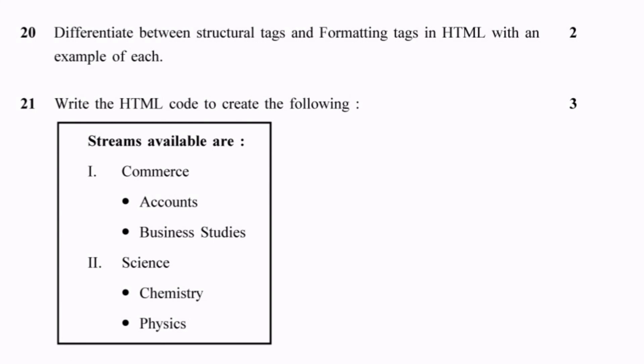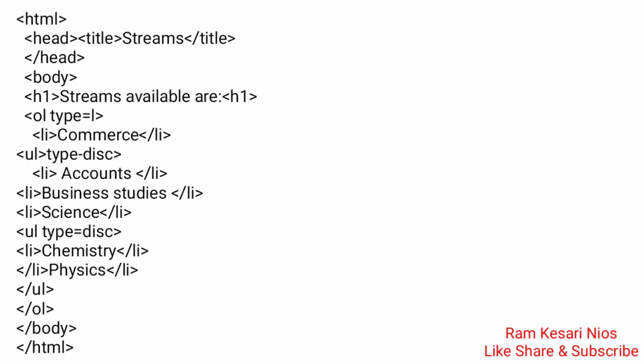Question 21: Write the HTML code to create the following streams. Available streams: 1. Commerce — Accounts, Business Studies. 2. Science — Chemistry, Physics. Pause the video and see the answer.